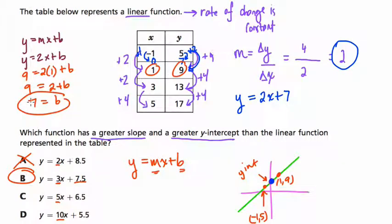So anyway, we want to find a greater slope and greater y-intercept. And the only one that satisfies that is B because the slope is 3 and the intercept is 7.5, which is greater than 7. All right, I hope this helped.